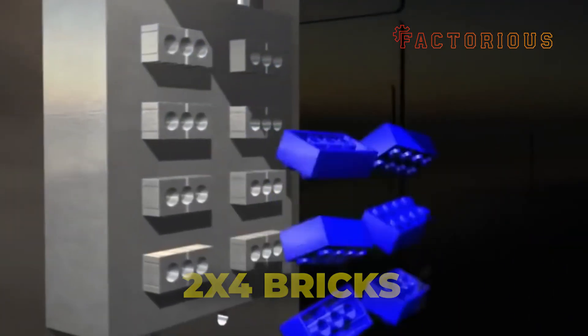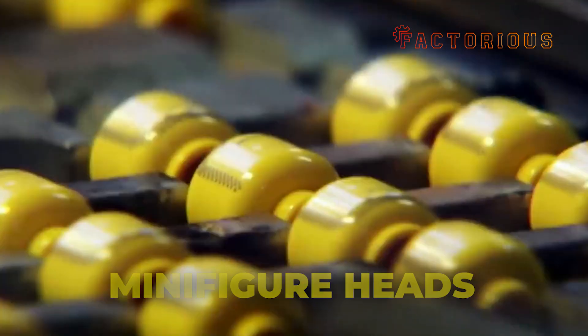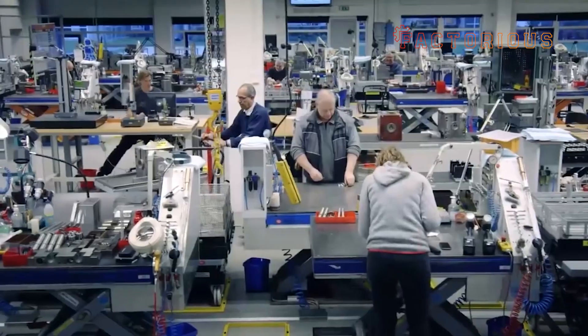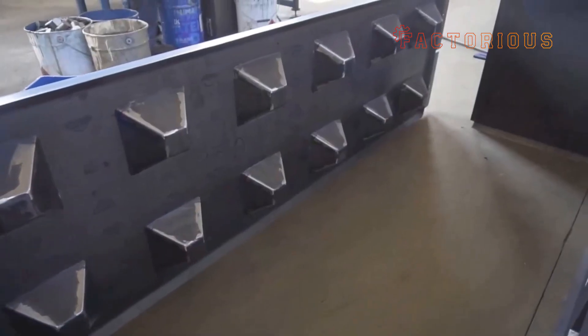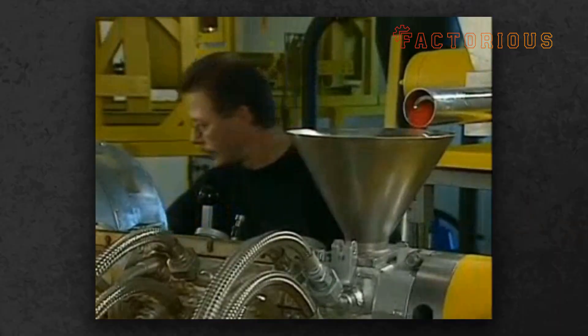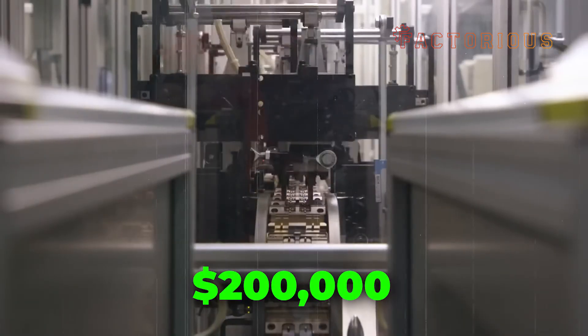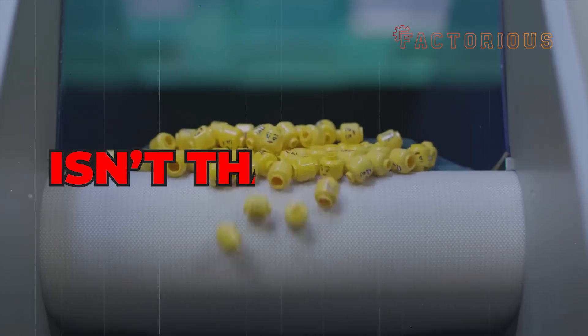One mold might produce only 2x4 bricks, another handles wheels, and another makes tiny minifigure heads. One interesting secret. Lego's molds are guarded like treasure. They're so valuable and so precise that only a handful of engineers have access to the design data. Each mold can cost up to $200,000 to make. And Lego has thousands of them around the world. Isn't that insane?